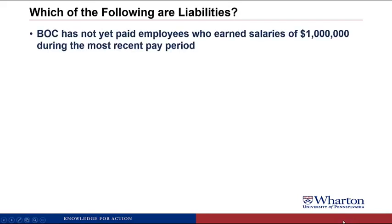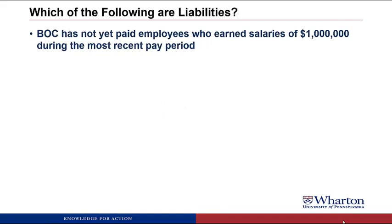BOC has not yet paid employees who earned salaries of $1 million during the most recent pay period. This would be a liability called salaries payable. It meets the first criteria because there's an obligation based on benefits received — the employees worked for us, we got the benefit of their services, and now we have an obligation to pay them. The amount is reasonably certain at $1 million, so we book a liability called salaries payable for $1 million.